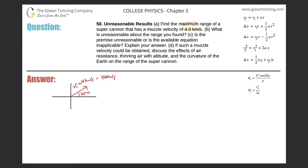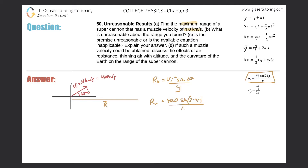Now to find the overall range, what we're looking for — R — we're going to use this formula on the right-hand side. The range equals the initial velocity squared times the sine of two times theta, divided by g. The initial velocity is 4,000 meters per second. The sine of two times 45° is the sine of 90°, which equals one — that's why it's a maximum — divided by 9.80.